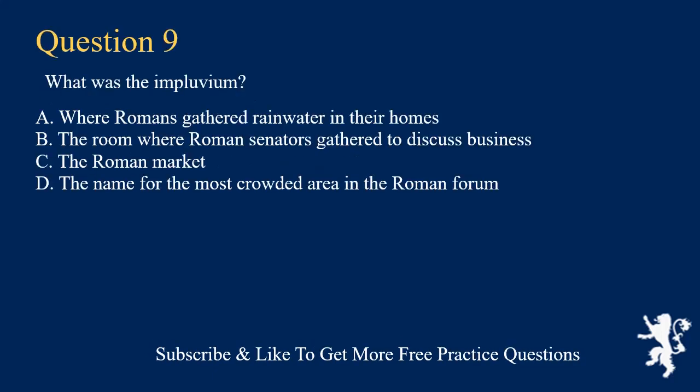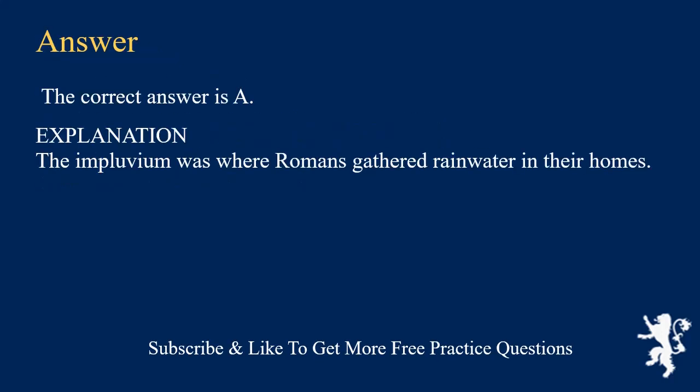What was the impluvium? A. Where Romans gathered rainwater in their homes. B. The room where Roman senators gathered to discuss business. C. The Roman market. D. The name for the most crowded area in the Roman forum. The correct answer is A.